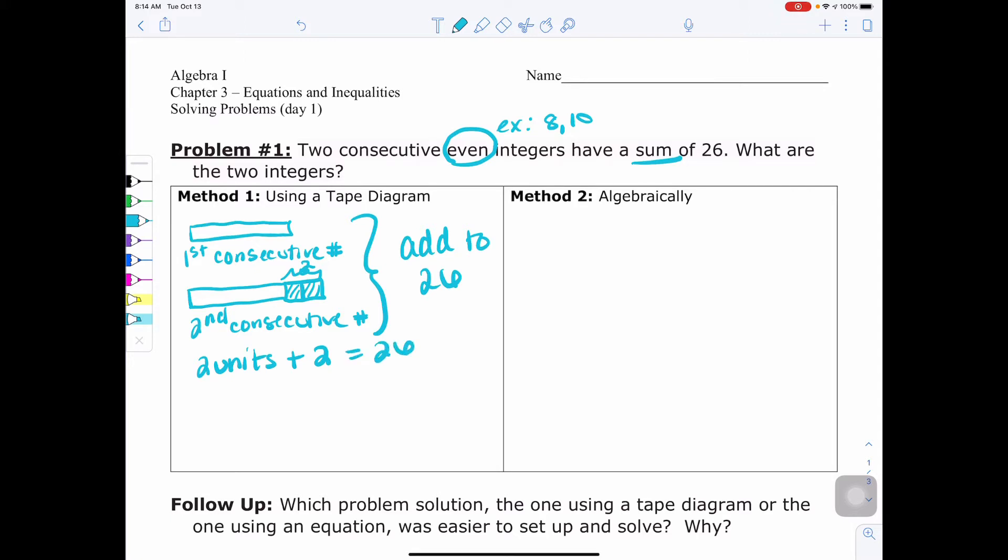So we know we have the two bars, which are our unknown units. So two units plus the two pieces we added to the second consecutive number to make it the next even consecutive number for a total of 26. Which means if I were to subtract two from both sides, I know two units would be worth 24. And therefore, one unit would be 12. So now I know from my answer, my first consecutive even number would be 12. And when I add two to that, my second consecutive even number would be 14.